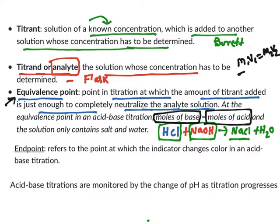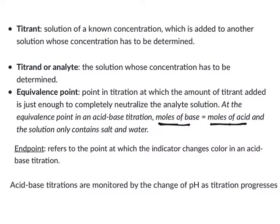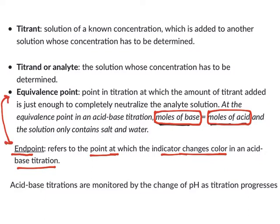At the equivalence point, the concentration of base will be equivalent to the concentration of acid. There is another term: end point. End point refers to the point at which the indicator changes color in acid-base titration. Equivalence point means the volume at which moles of base are equivalent to moles of acid. If these two values are close enough, then the titration will be accurate. Accuracy means the closeness of our experimental value to the true value.